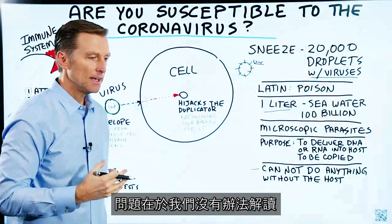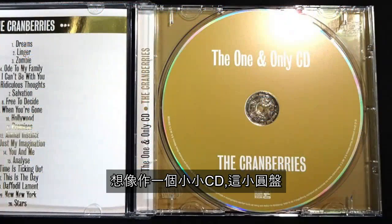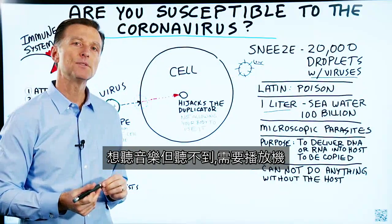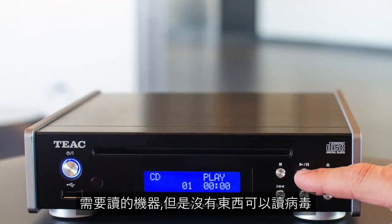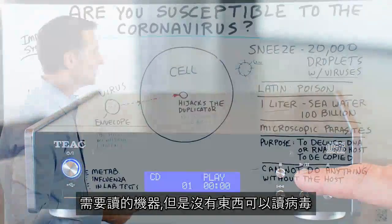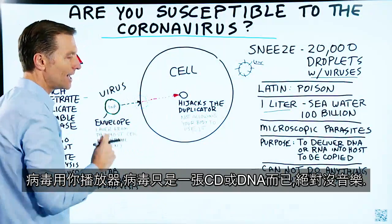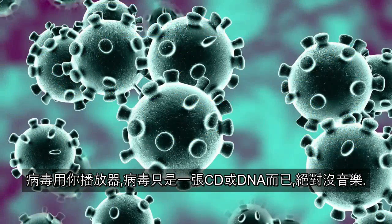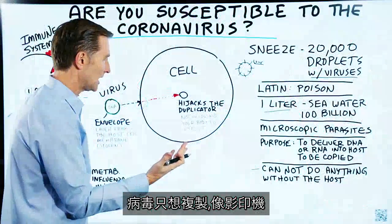The virus doesn't have anything that can read its own program. Envision you have a CD — a little round disc — and you're trying to listen to music. You can't listen to music without a CD player; you need something to read it. Well, the virus does not have a reader; it uses your reader. All it has is the CD, or the DNA. And it's definitely not going to be playing music — it just wants to replicate, like a copy machine.